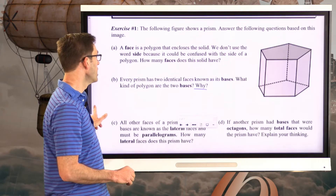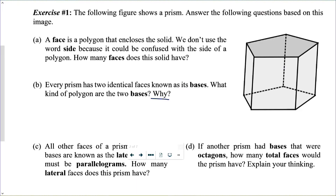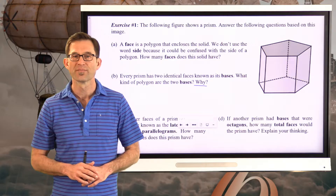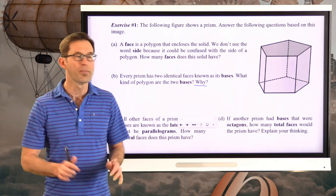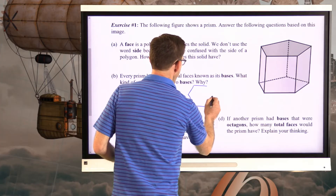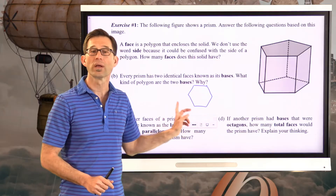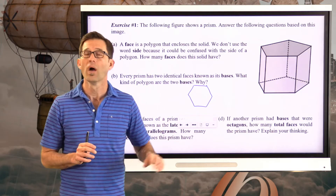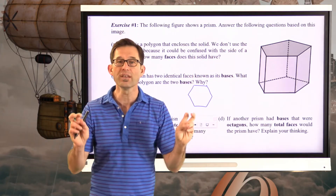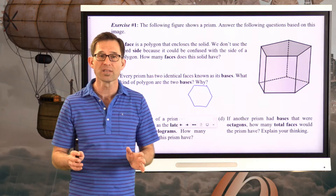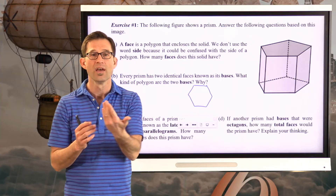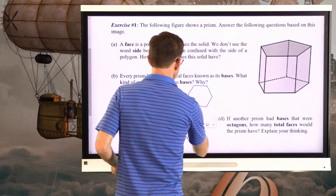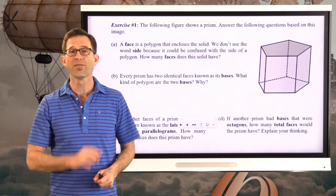Let's jump into exercise one and analyze a prism. The following figure shows a prism — answer the following questions based on this image. Letter A: a face is a polygon that encloses the solid. We don't use the word 'side' because it could be confused with the side of a polygon. With two-dimensional figures like a hexagon, we talk about the straight line segments as its sides. But with a solid, those flat surfaces that enclose it are called faces. How many faces does this solid have? Pause the video and count them up.